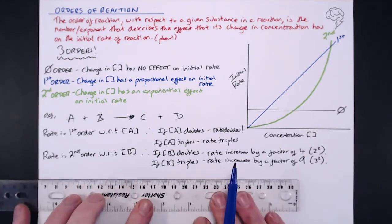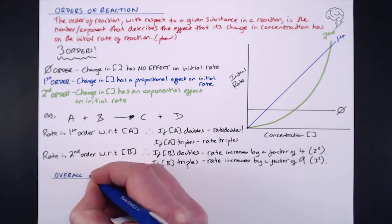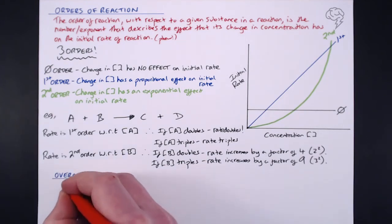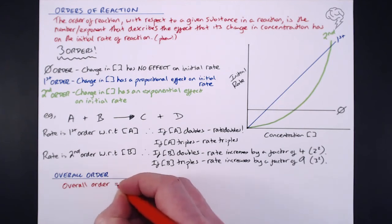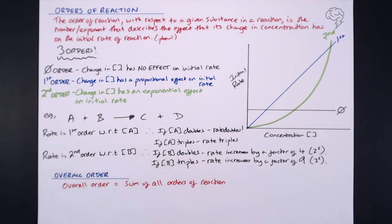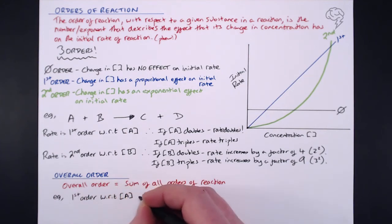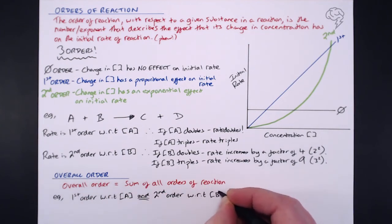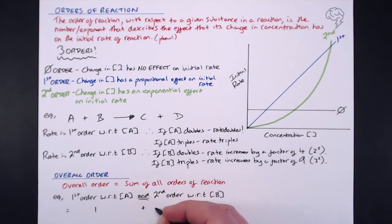There's one last thing that we need to be aware of — that's the overall order for the reaction. In questions, they love asking you this. The overall order of reaction is the sum of all the orders of reaction for all your reactants. So in the equation above, if it's first order with respect to the concentration of A and second order with respect to the concentration of B, then first order (one) plus second order (two) equals three.